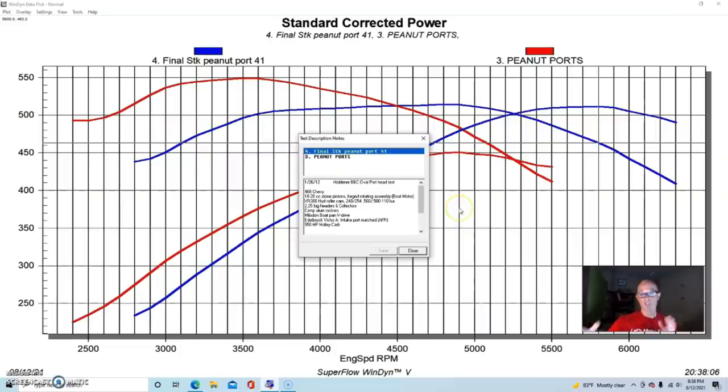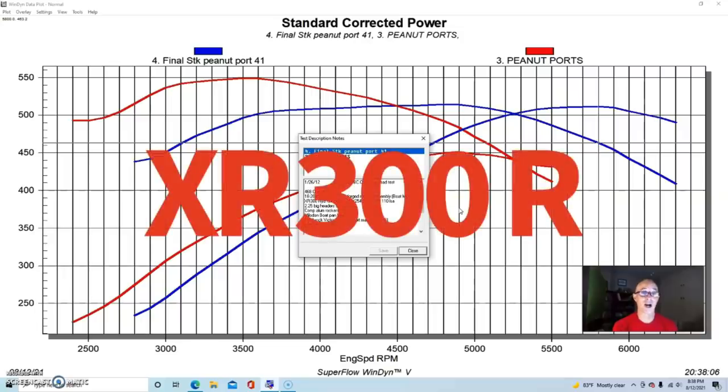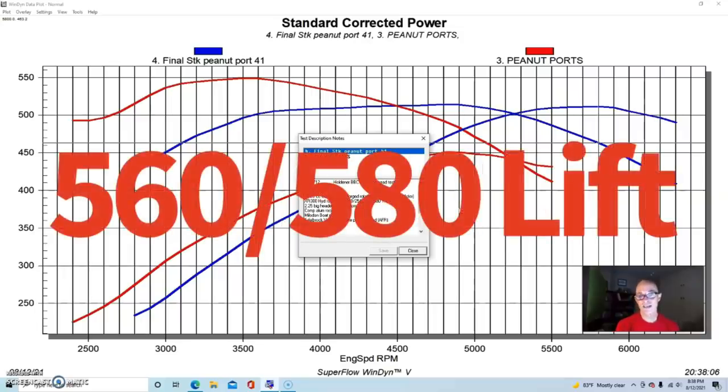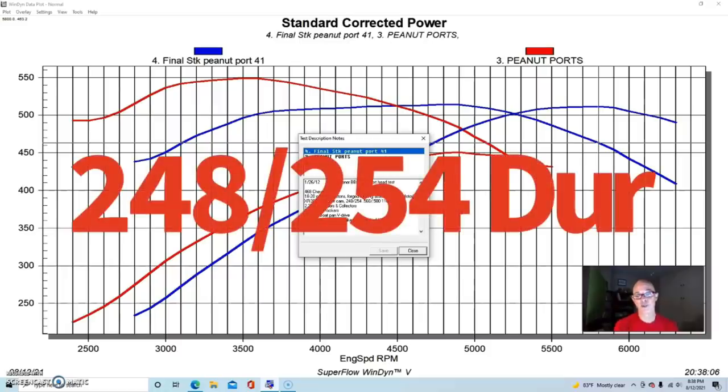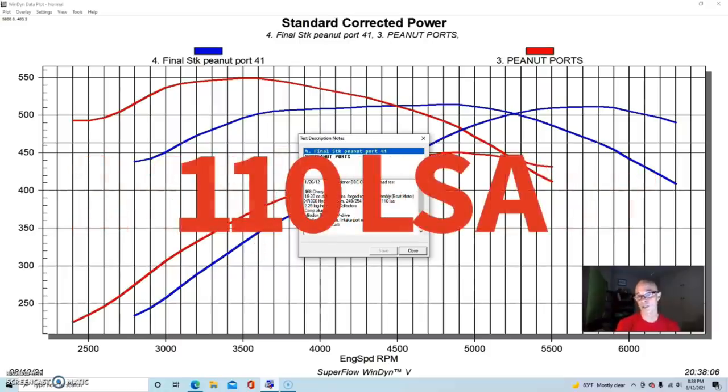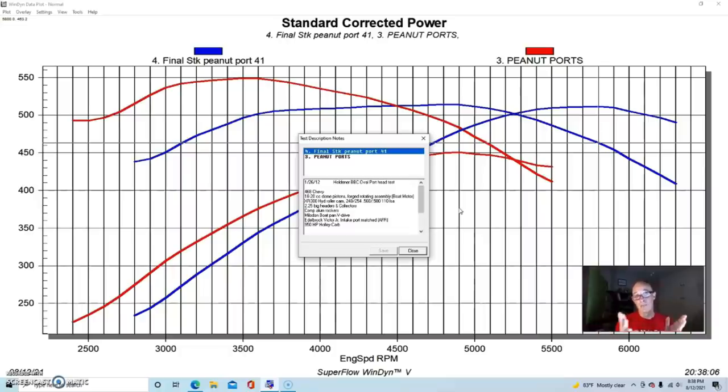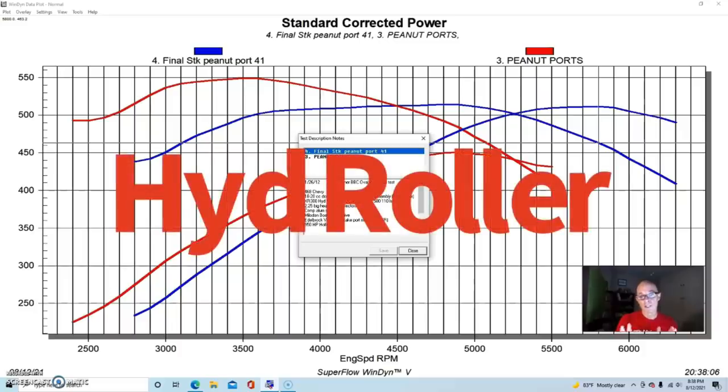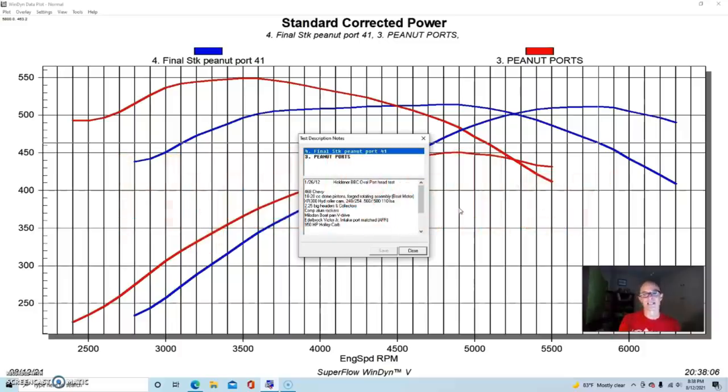Our new combination was the same short block but it had a much bigger camshaft, an XR 300. It was 560/580 lift split and 248/254 degree duration split, 110 degree lobe separation angle. Much more camshaft than the fairly mild 268 cam. This was also a hydraulic roller, so we did a retrofit hydraulic roller. We had to put a cam button and that kind of stuff on. The reason we did this, we didn't do all these changes for the peanut port heads, we did it for a big cylinder head test. We were going to use the peanut port heads basically as the stock version and then everything else would be going up from there.